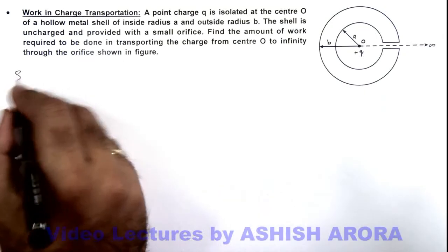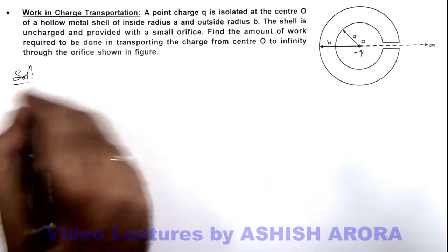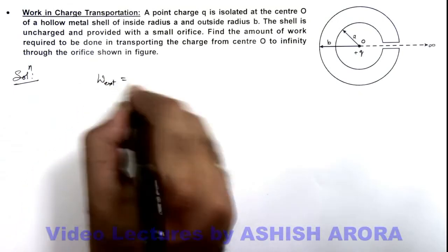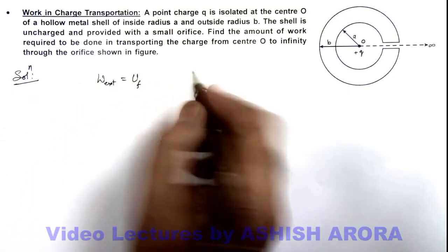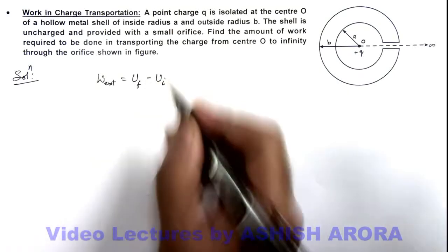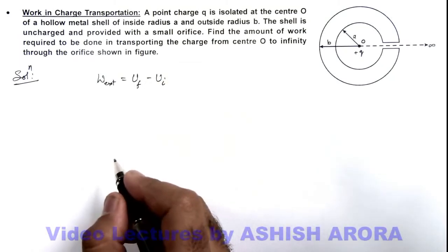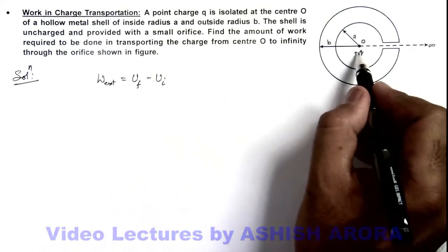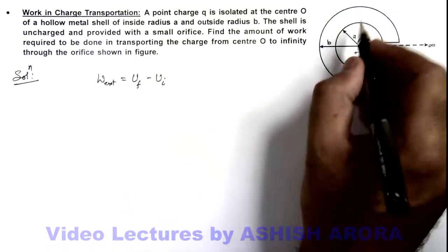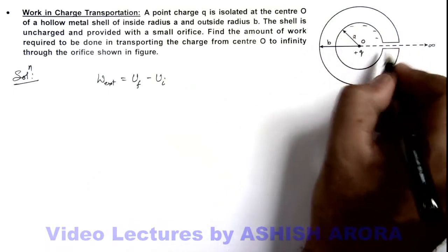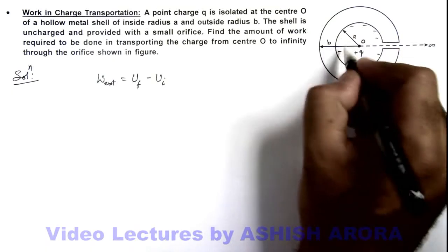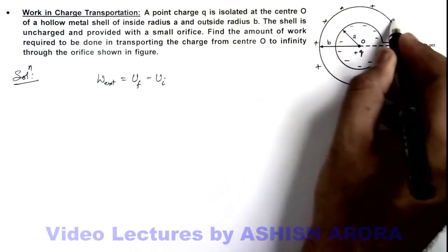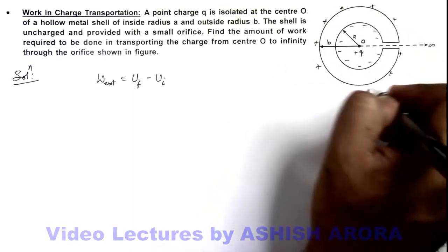Now in this solution, to find out the external work, we can simply write it as final energy of the system minus initial energy of the system, as we already studied. In this situation, due to this charge +q, on the inner surface of the shell a negative charge will be induced, and on the outer surface an equal positive charge will also be induced, like what I am drawing here.